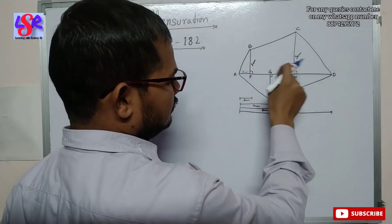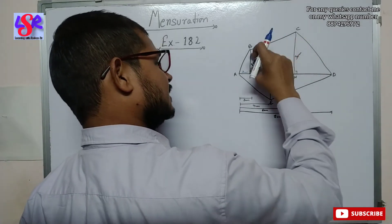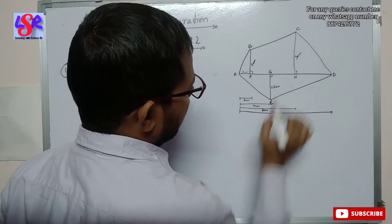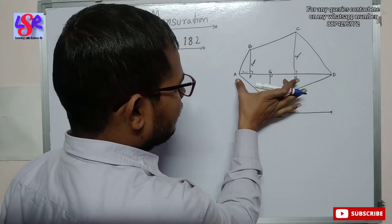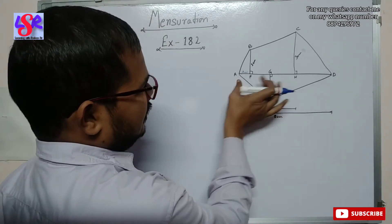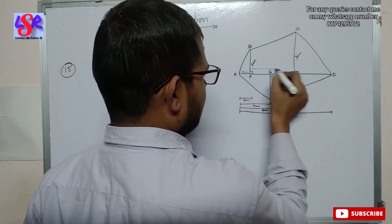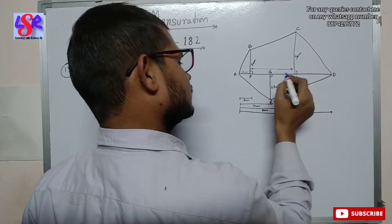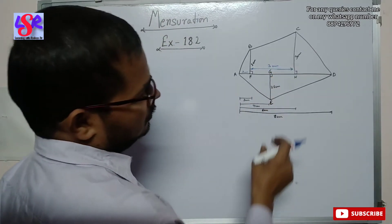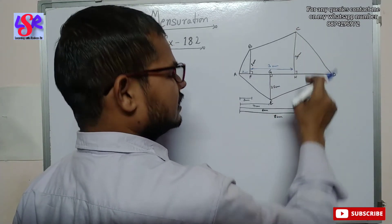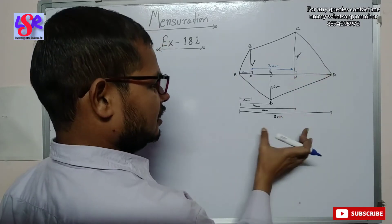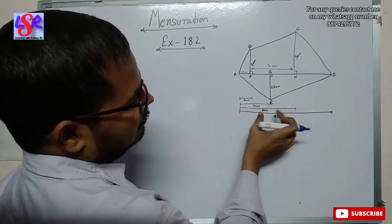For the trapezium, the parallel sides are 2 centimeters and 3 centimeters respectively, but the height is not given directly. We are given AH as 6 centimeters and AF as 3 centimeters. So the height FH equals 6 minus 3, which is 3 centimeters. For triangle CHD, the height HD is also not directly given, so we subtract: HD equals AD minus AH, which is 8 minus 6 equals 2 centimeters.